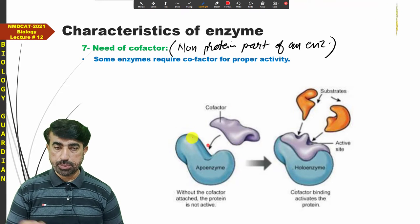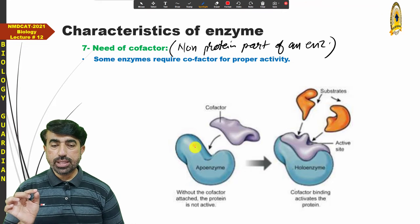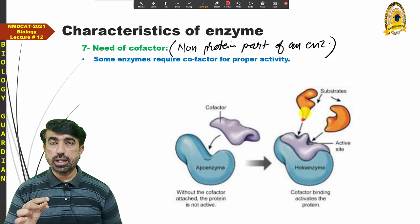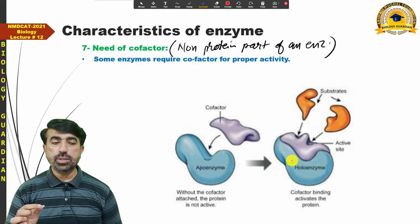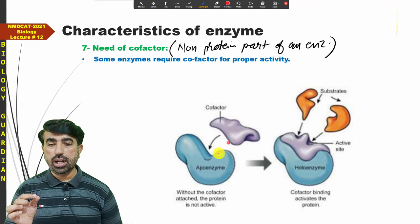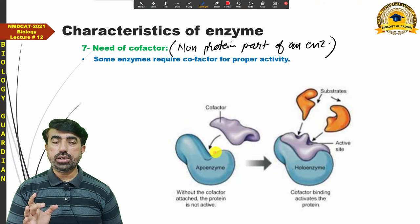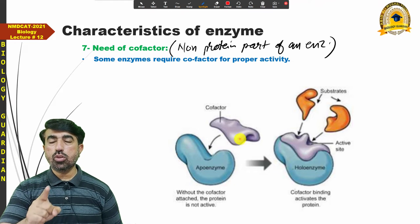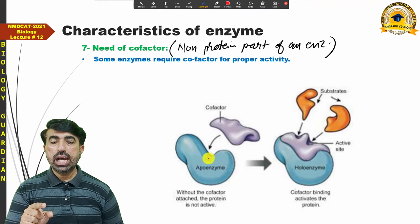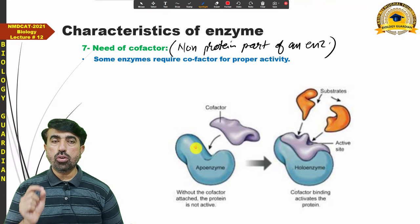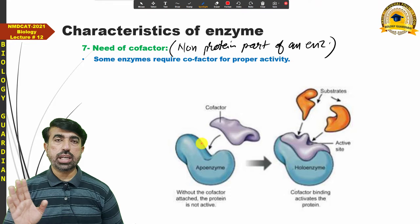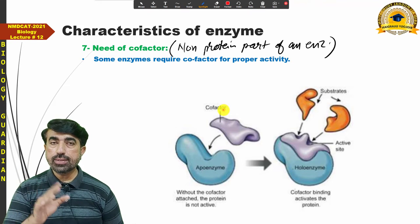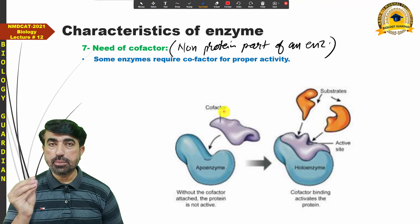Sometimes the active site of an enzyme is not fully compatible with the shape of the substrate. In that case, a co-factor is needed to make the active site compatible with the substrate, so the substrate can bind easily. Enzymes that need a co-factor will only be functional with their co-factor — without it, they remain non-functional. However, many enzymes can also work without a co-factor.